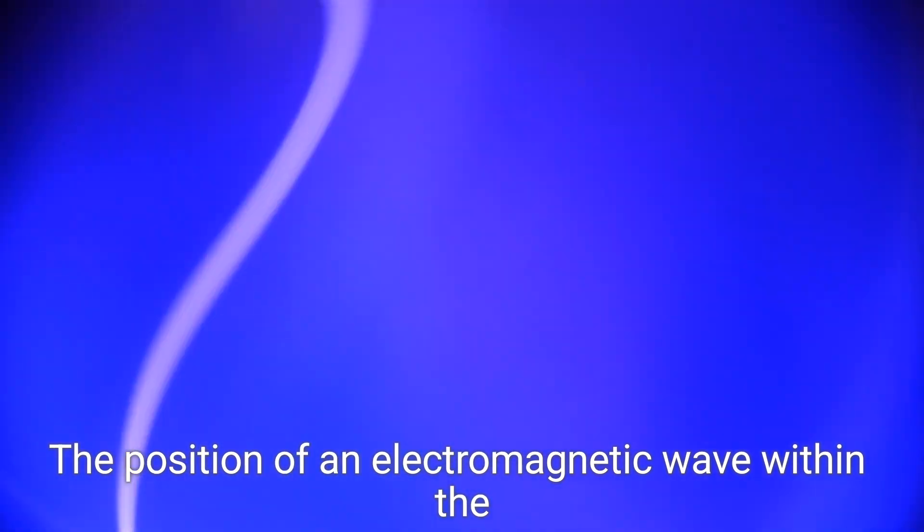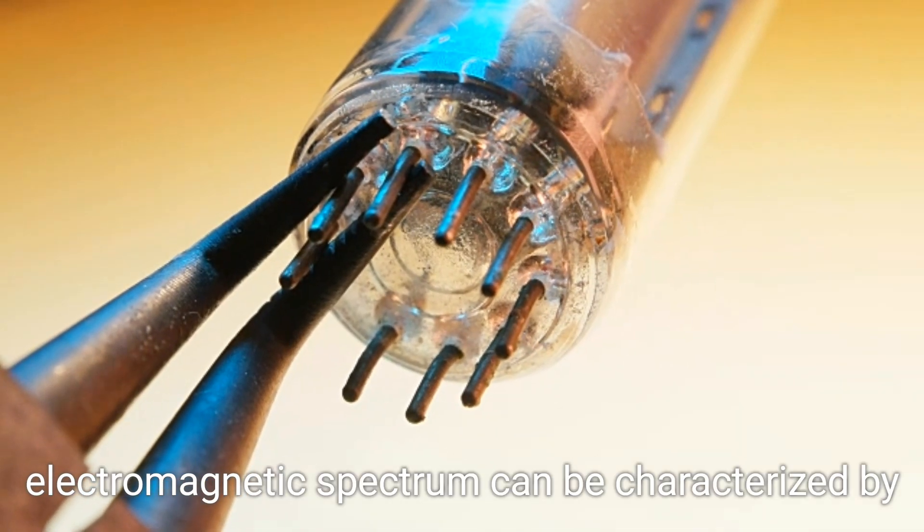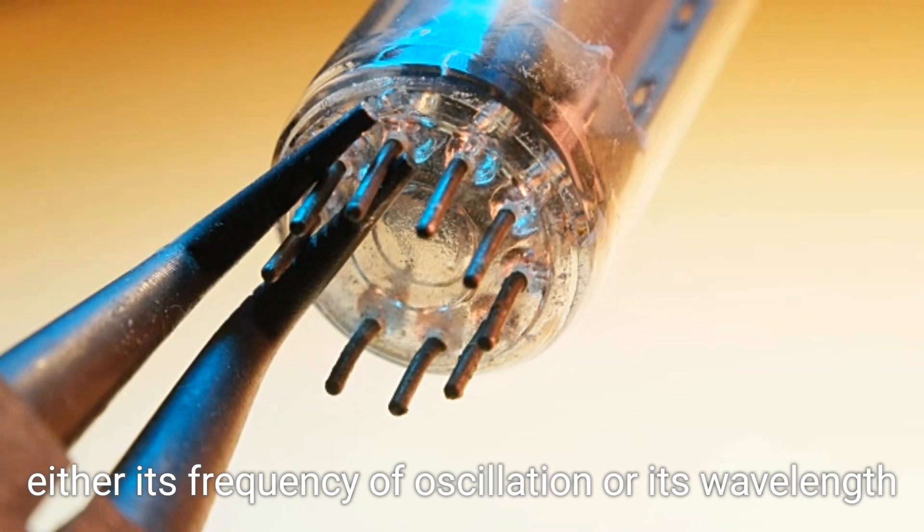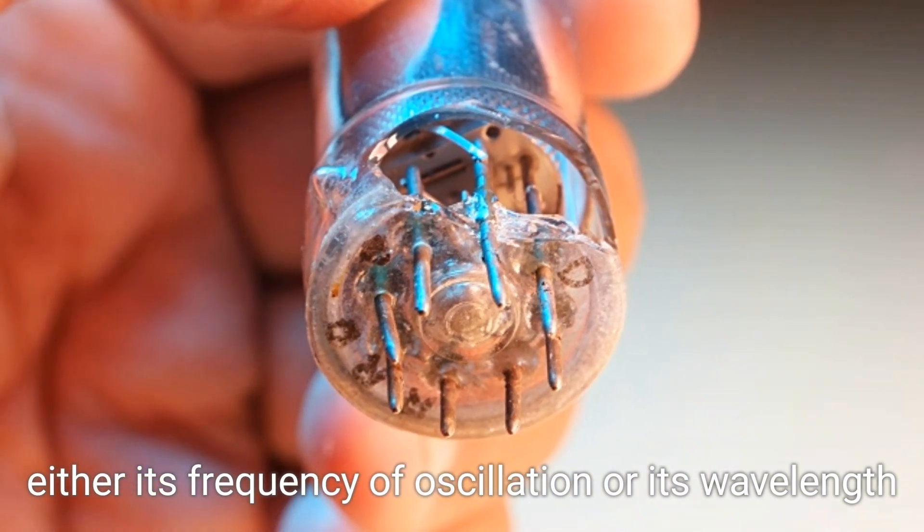The position of an electromagnetic wave within the electromagnetic spectrum can be characterized by either its frequency of oscillation or its wavelength.